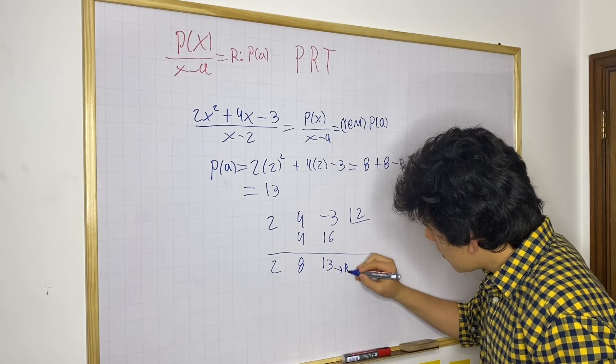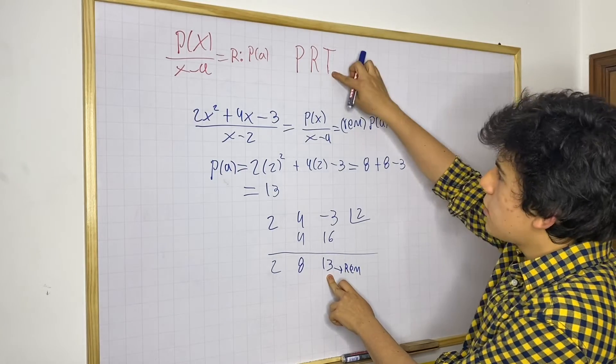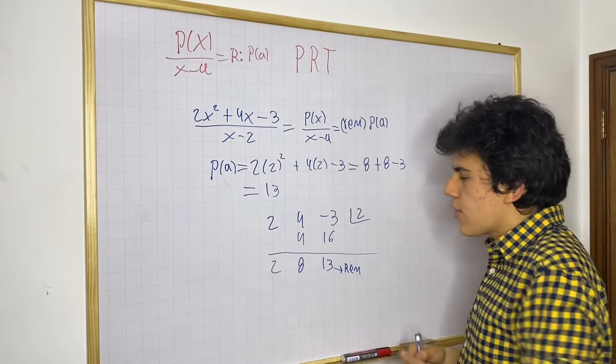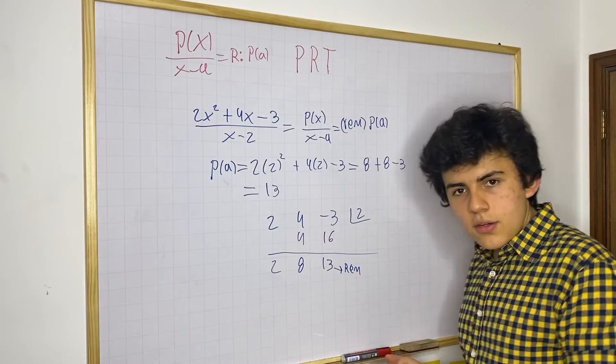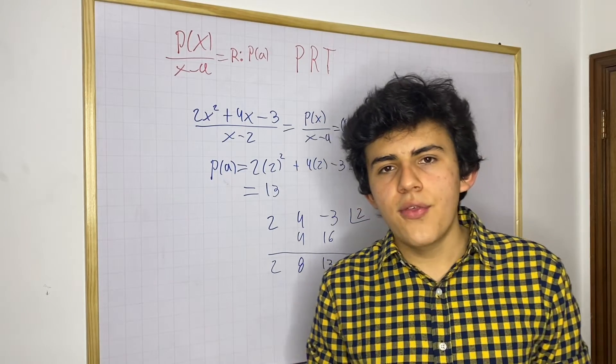So this is your remainder, which means that this polynomial theorem is indeed correct. We also got 13 for this method. So it works, as you guys can see.